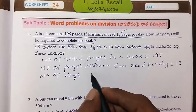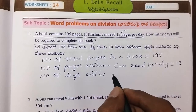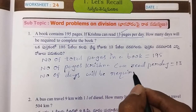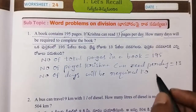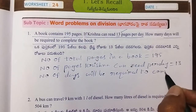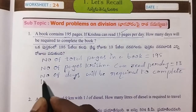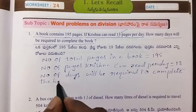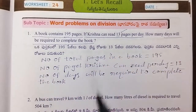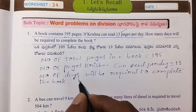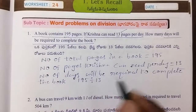Number of days required to complete the book equals total pages divided by 13. That is, 195 divided by 13.